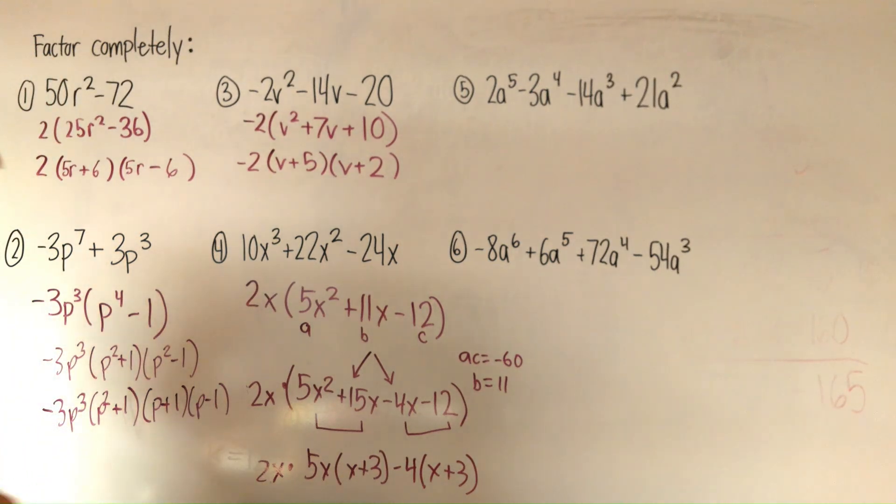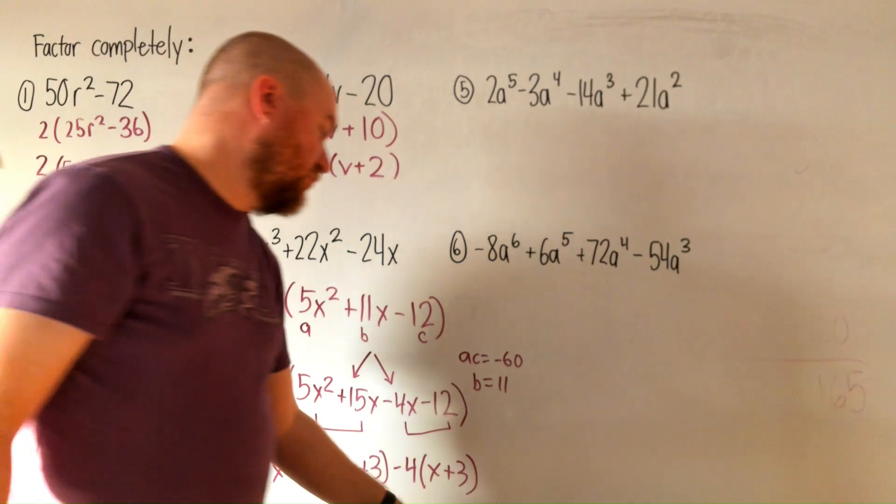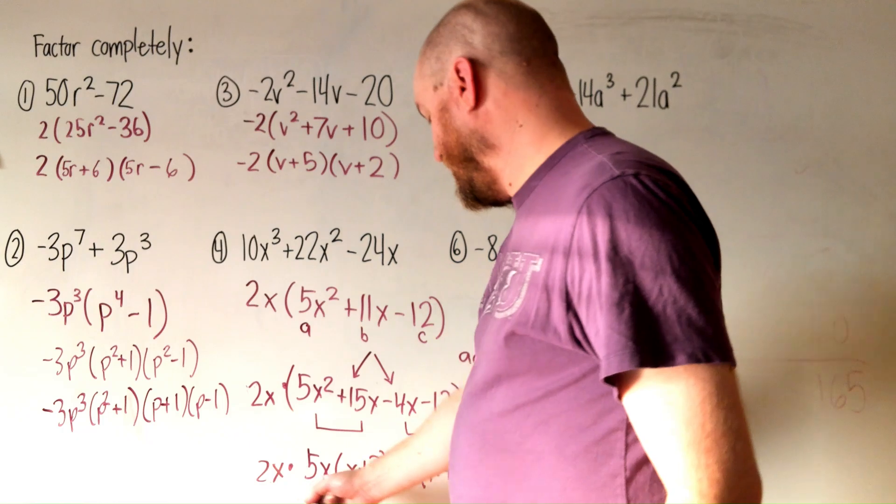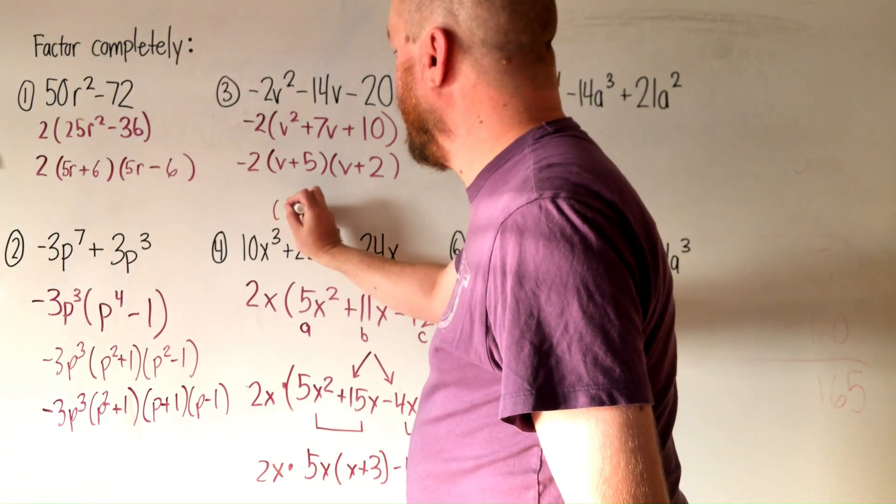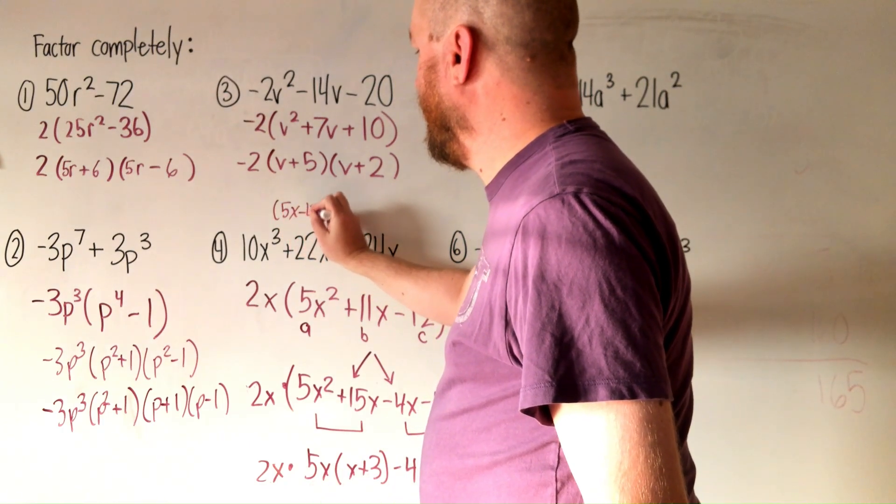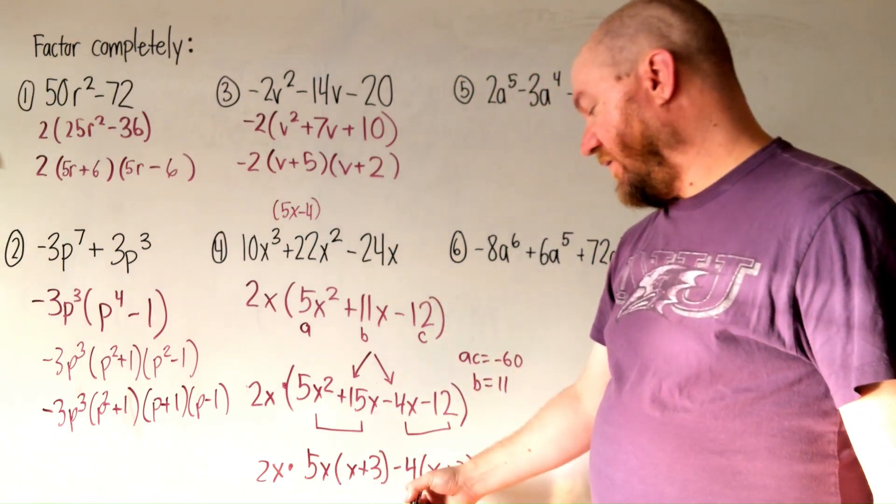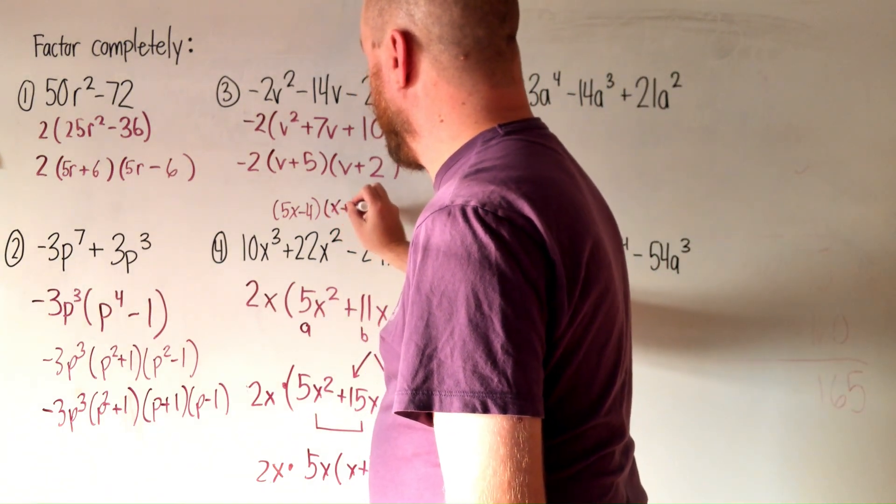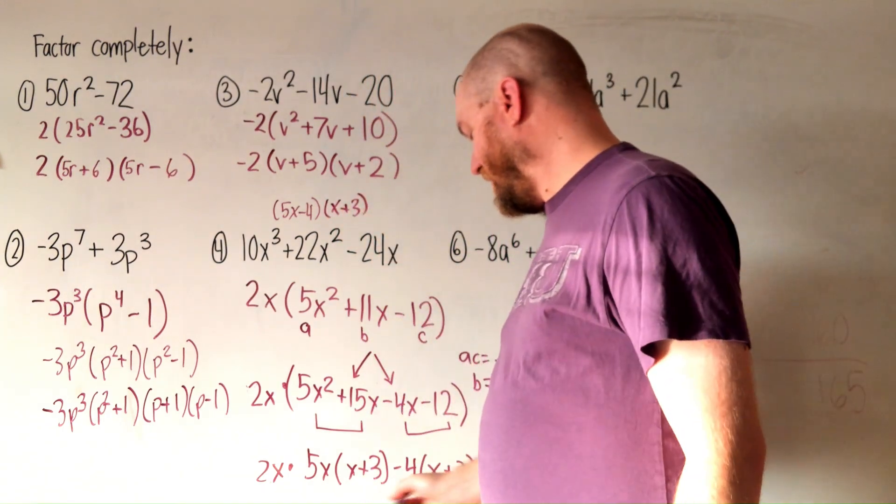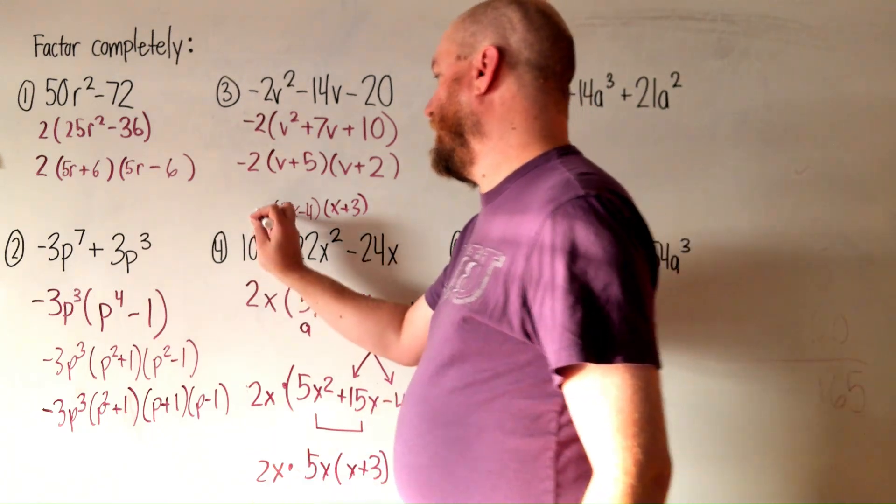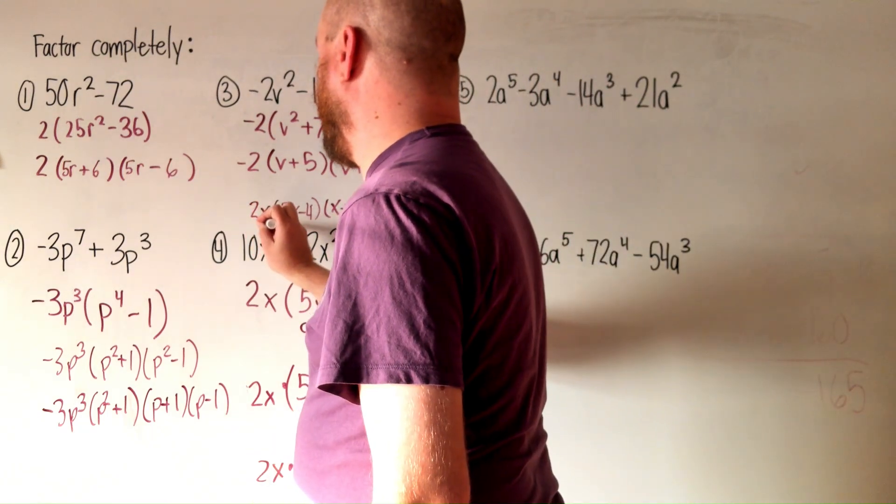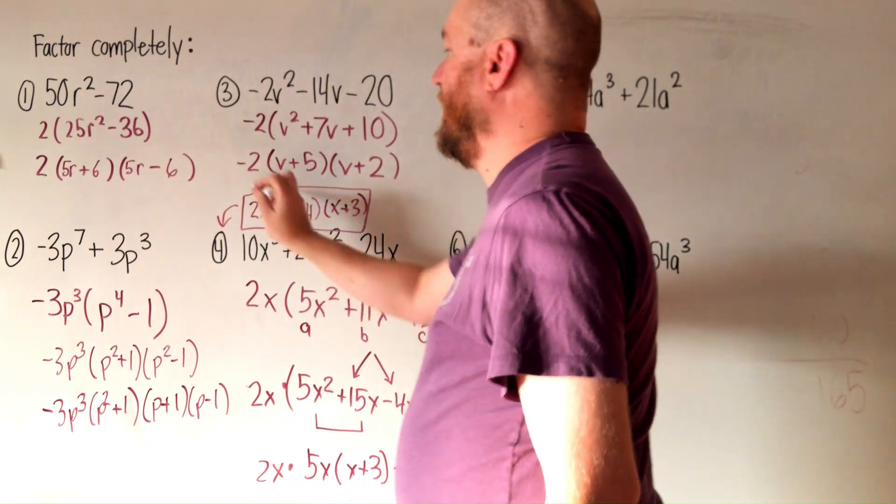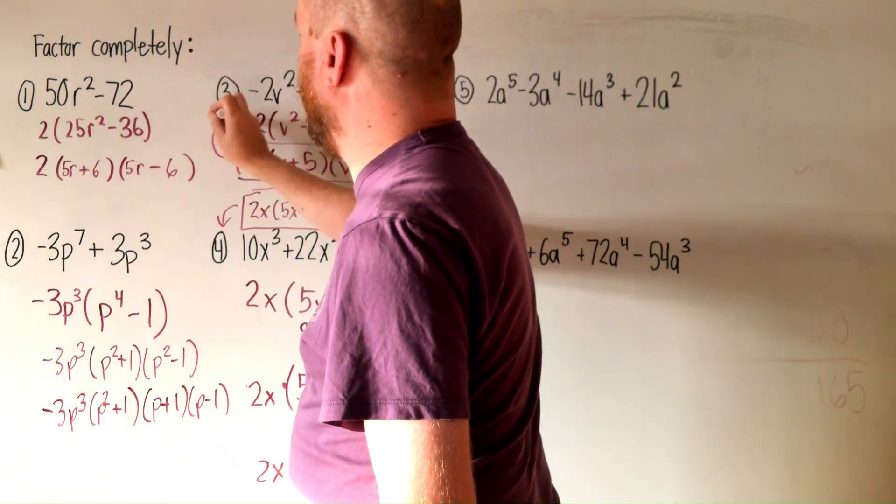And then finally for our last step here, I'm running out of room on the screen here. Our final answer, I'll write it up top so we can see it. We have 5x minus 4. Remember when we do grouping, the stuff in front of the parentheses is an answer, and the stuff in parentheses is an answer. x plus 3 is our other stuff in parentheses. And then 2x is still floating out there, so let's just stick it right there. So our answer to question number 4 is that. I'll make this clear that this is the answer to question 3.